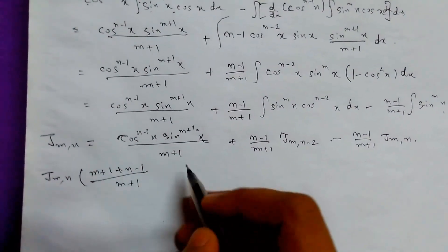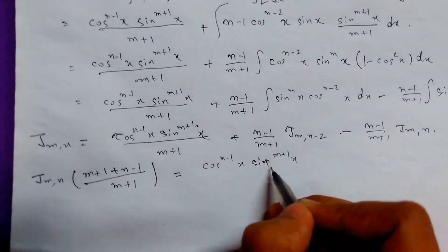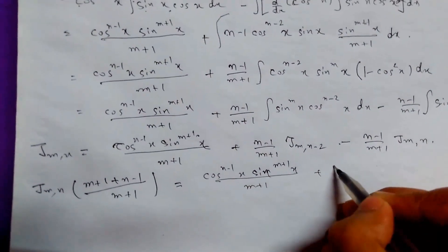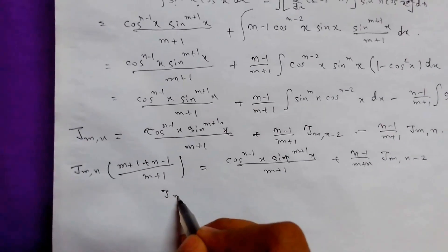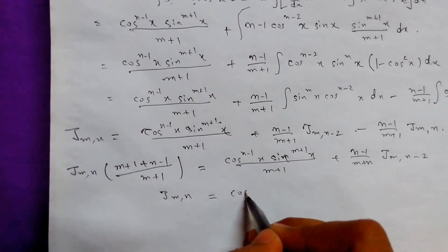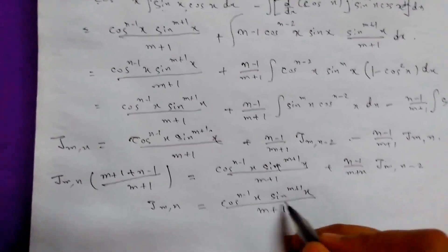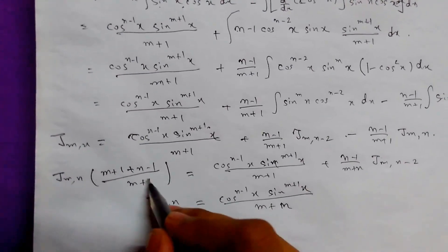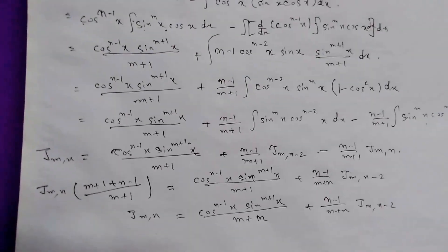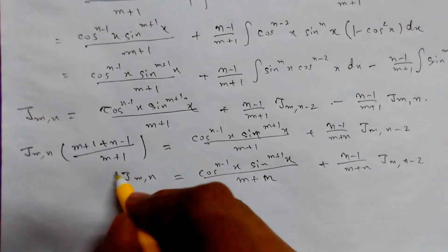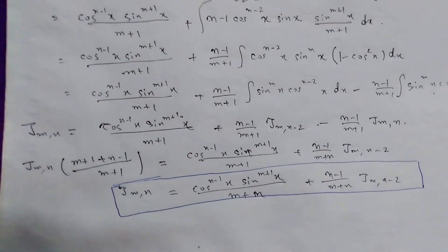We have taken J(m,n) to the left side and done the simplification. After simplifying, J(m,n) times (m+n)/(m+1) equals the boundary term. Final step: J(m,n) equals cos^(n-1)(x) · sin^(m+1)(x) upon (m+n), plus (n-1)/(m+n) times J(m, n-2). So this is our reduction formula.